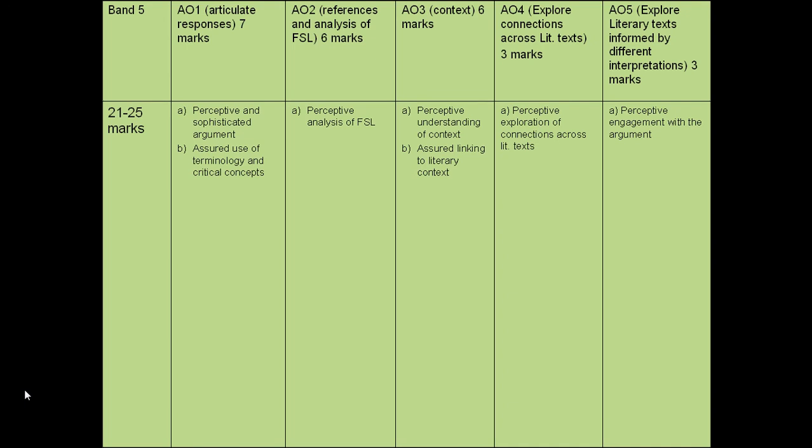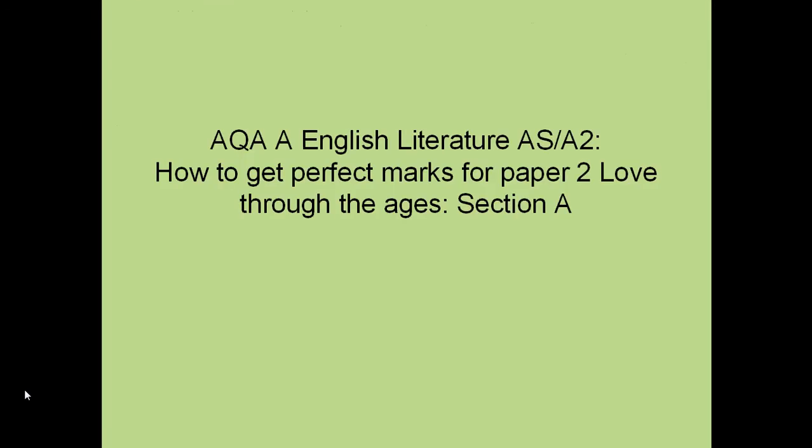AO5 is your use of different interpretations. Are you able, for instance, to explore what a feminist writer might say, or what a Russian formalist might think? Or are you talking about alternative interpretations based on your own ideas? So let's start to think about how we can plan and then go on to write this response. When you're ready, watch the next video — thank you.